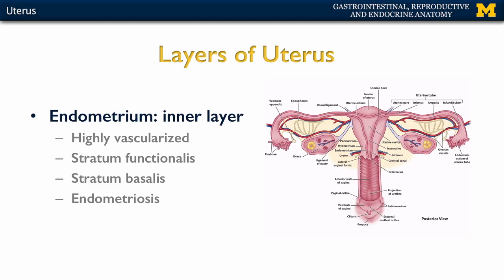The deepest layer is the endometrium, which is particularly important in terms of the menstrual cycle. This is highly vascularized, which makes sense when you're thinking about menstrual flow. There are two main parts of the endometrium: the stratum functionalis, which is the part that will be sloughed off during menstruation; and the stratum basalis, which is always the permanent layer and will help in the formation of the stratum functionalis after menstrual flow.